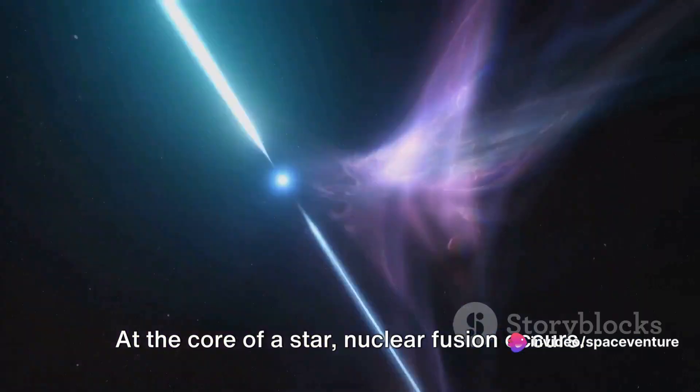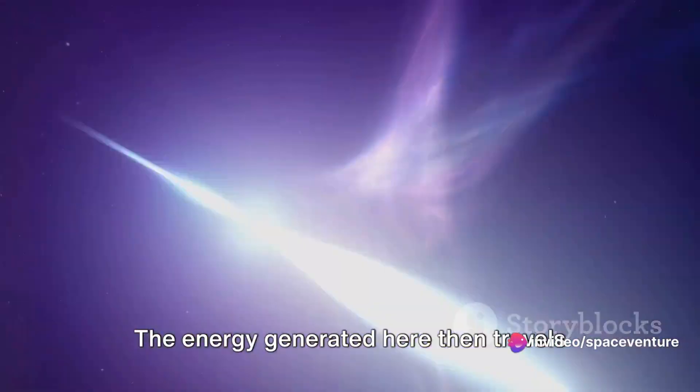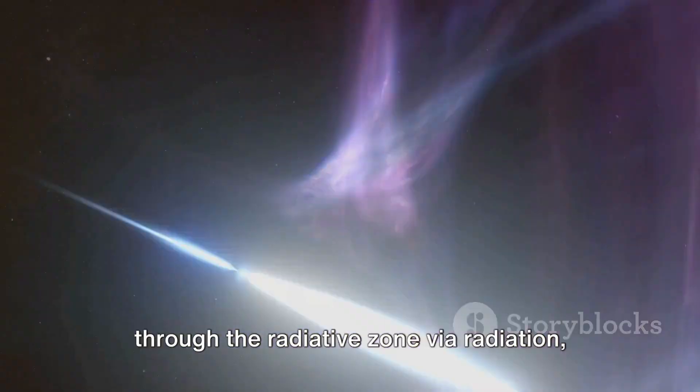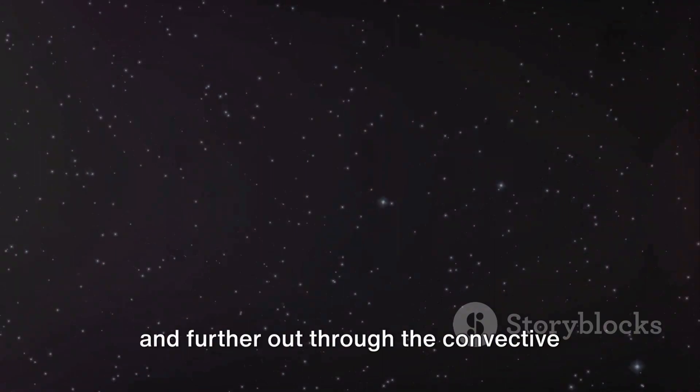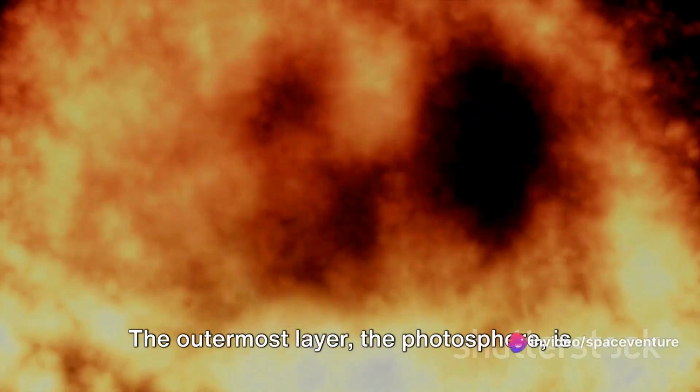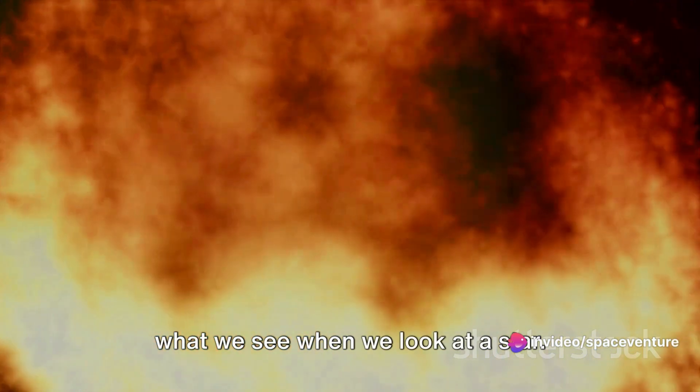At the core of a star, nuclear fusion occurs. The energy generated here then travels through the radiative zone via radiation, and further out through the convective zone via convection. The outermost layer, the photosphere, is what we see when we look at a star.